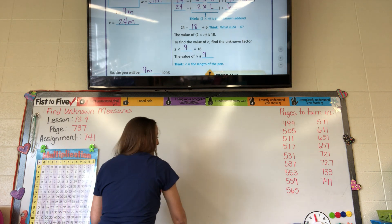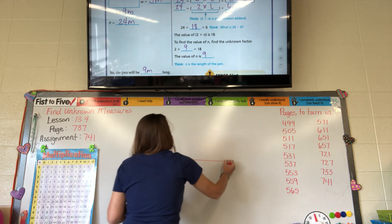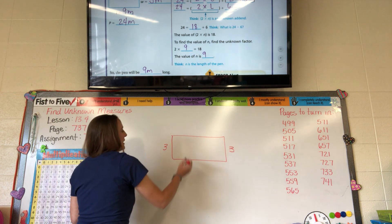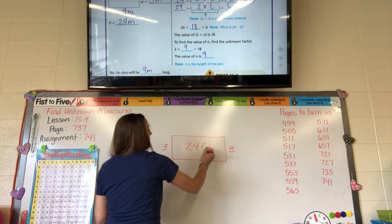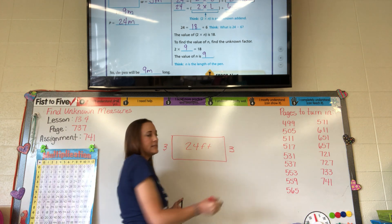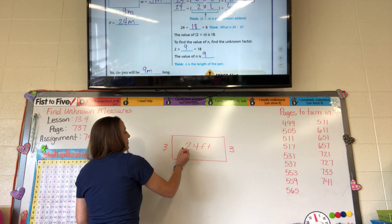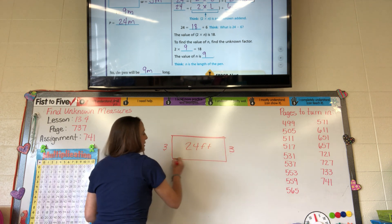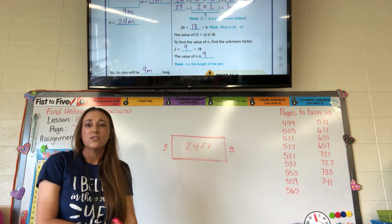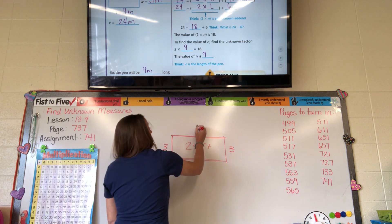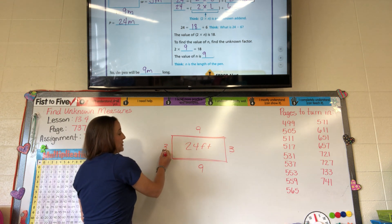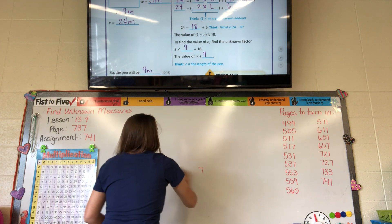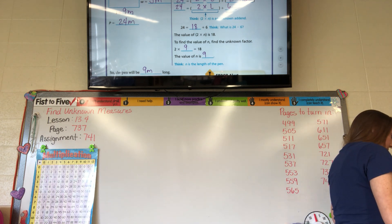You could also look at it using a model: I've got this dog pen, I know the width is 3 on both sides. 3 and 3 is 6, and 24 take away the 6 is 18. So this side plus this side equals 18. You just cut 18 in half — 9 and 9. Then 9 and 3 is 12, 9 and 3 is 12, and 12 plus 12 is 24.